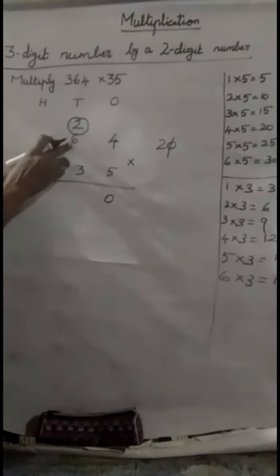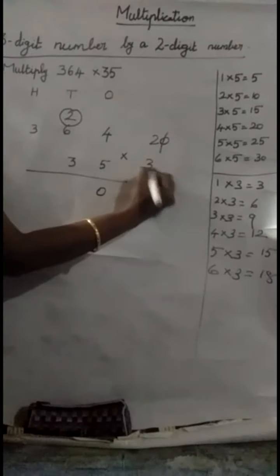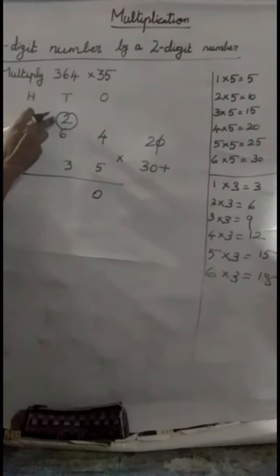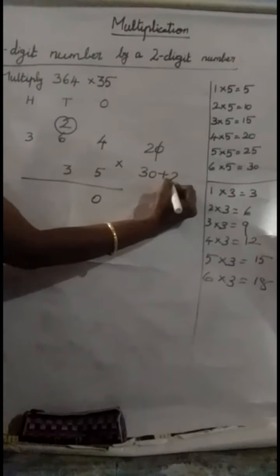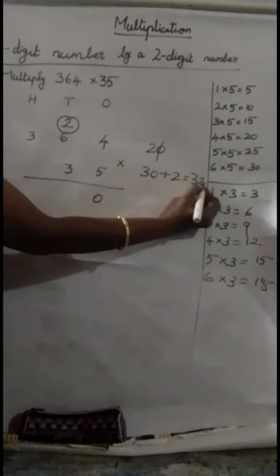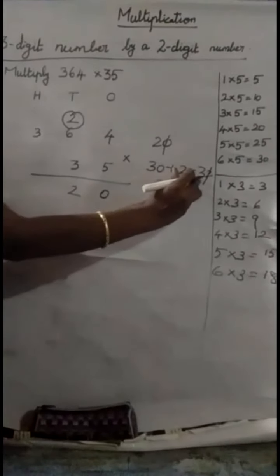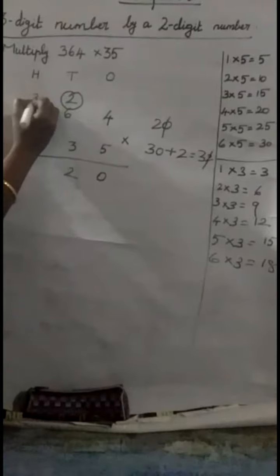Now, move on to the 10s place. Next, what is the number here? 6. 6, 5s are 30. Plus, what is the reminder here? 2. So, 30 plus 2. 32. Strike out the 2. Put the 2 in the 10s place. And 3 in the 100th place.